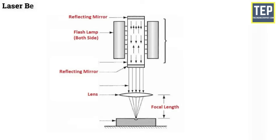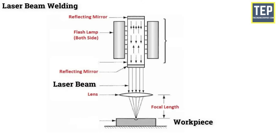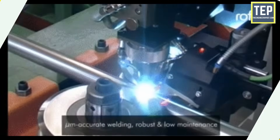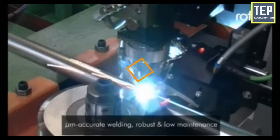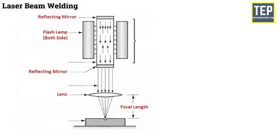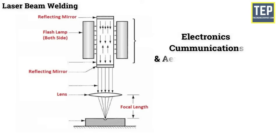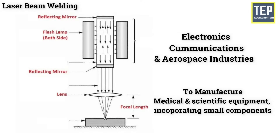Laser beam welding is a welding process in which heat is formed by a high-energy laser beam targeted on the workpiece. The laser beam heats and melts the ends of the workpiece, making a joint. In this type of welding, the joint is formed as a sequence of overlap spot welds or as a continuous weld. It is employed in the electronics, communications, and aerospace industries to manufacture medical and scientific equipment incorporating small components.